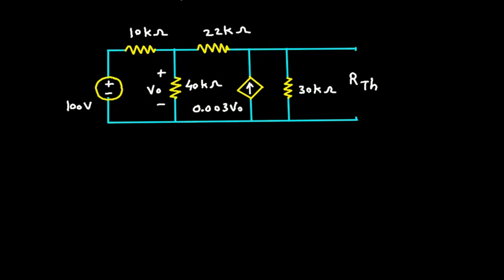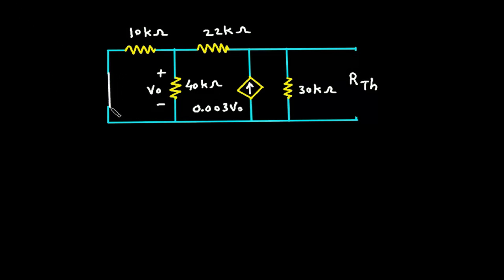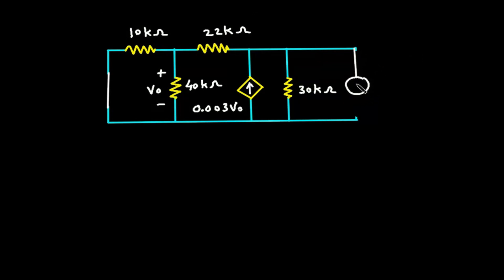Now we will turn off all the independent sources. This is a voltage source, so it will be turned off and short circuited. Here we can see this is a dependent source, so to find RTH we will consider a 1V voltage source here — positive on one terminal, negative on the other. This will be 1V.